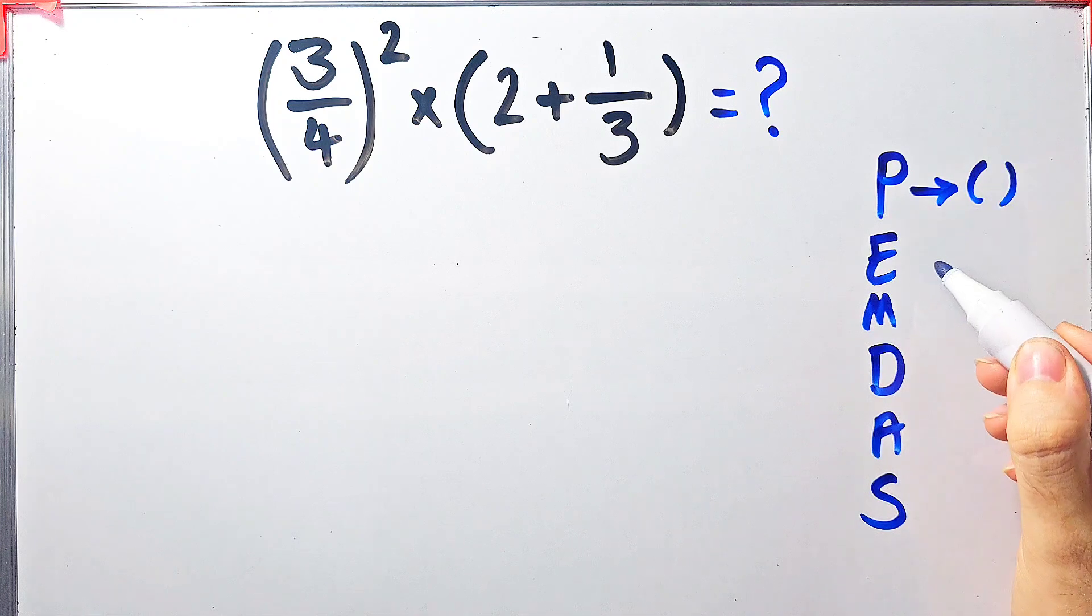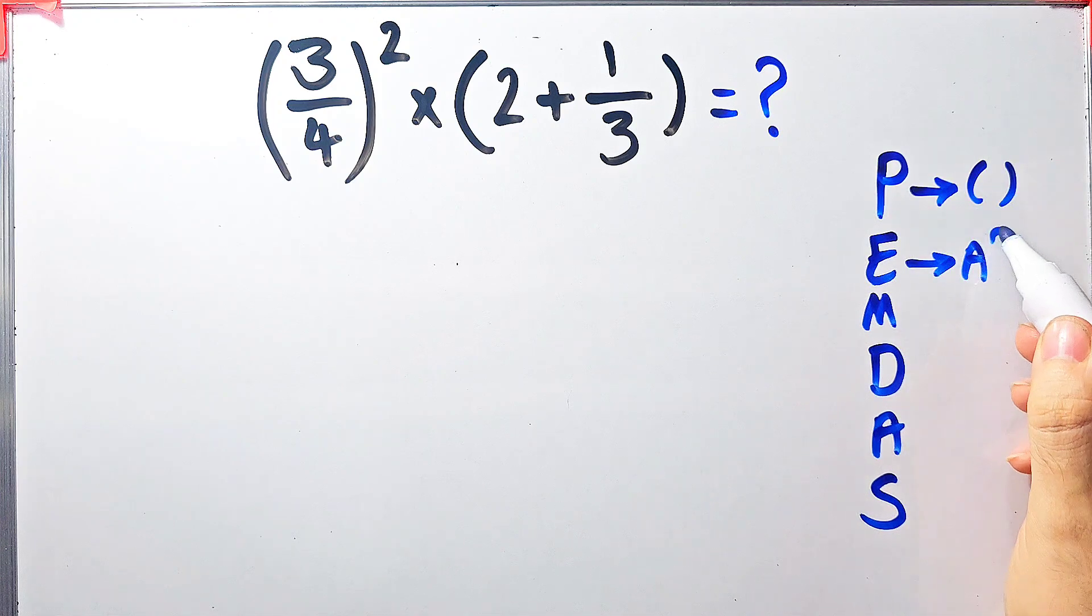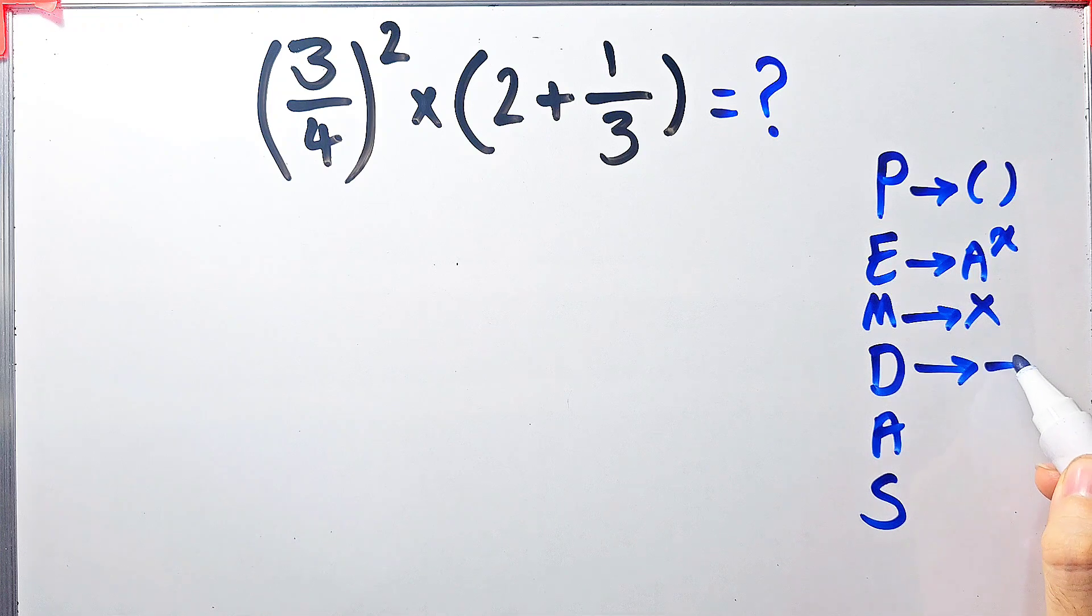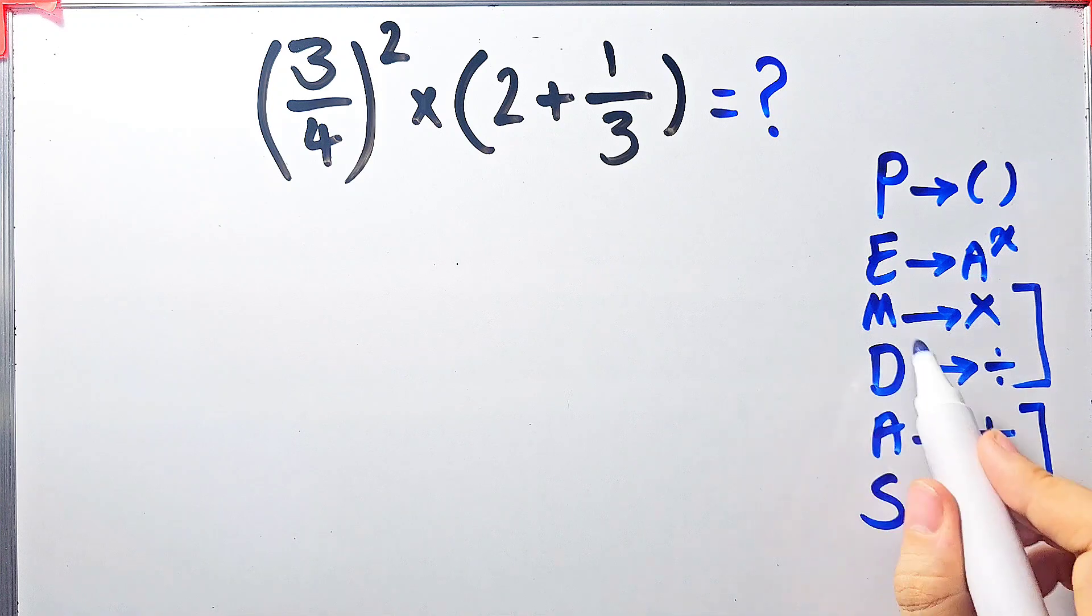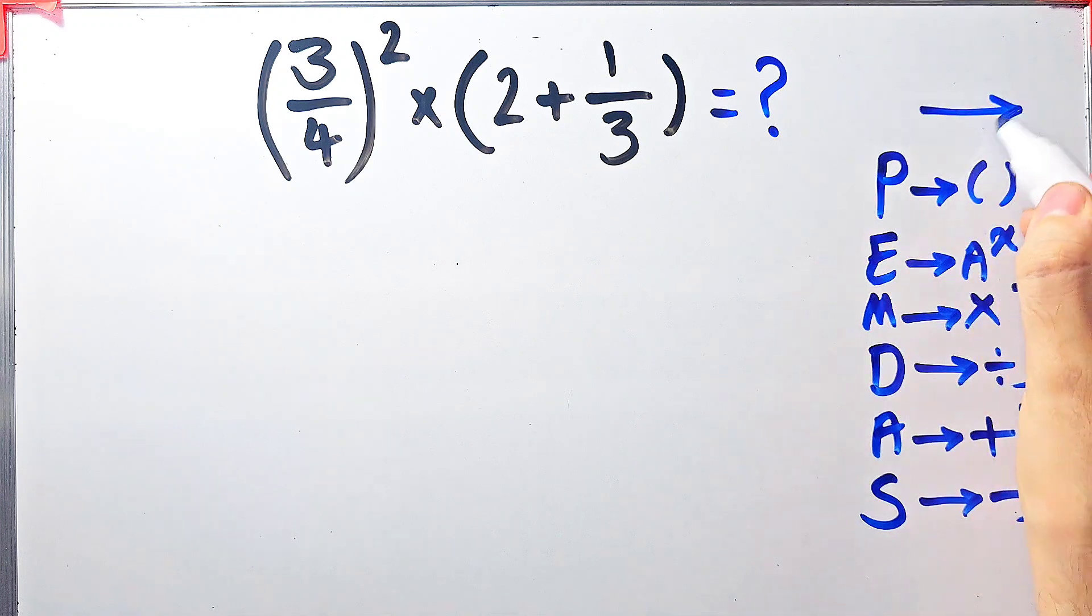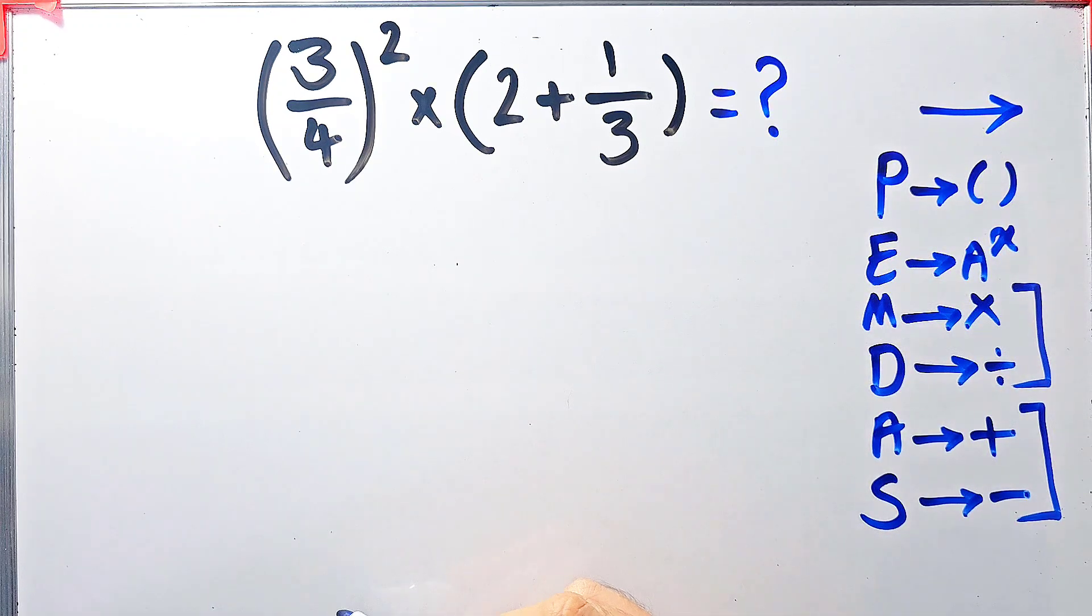M stands for multiplication, D stands for division, A stands for addition, and S stands for subtraction. Multiplication and division have the same level of priority. Also, addition and subtraction have the same level of priority. When we have both in an expression, we start from the left and simplify the question.